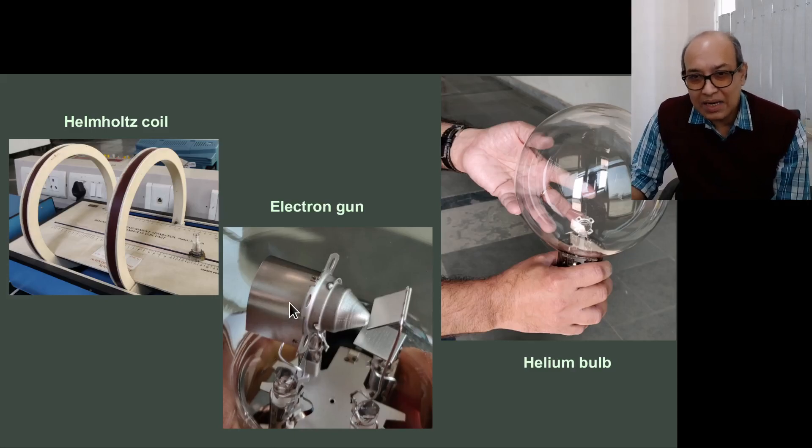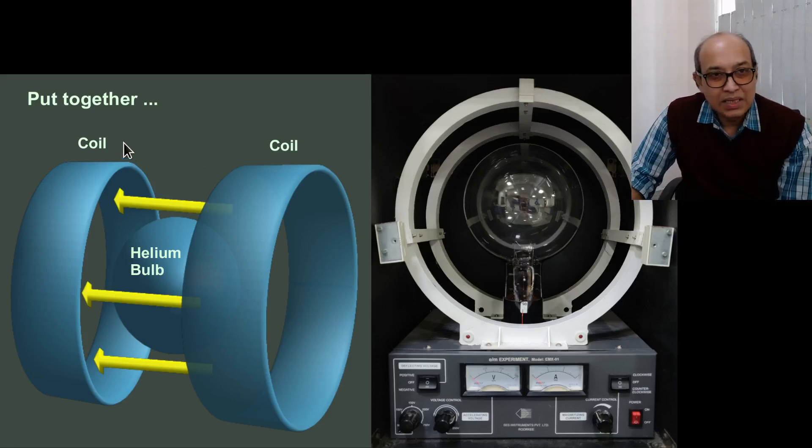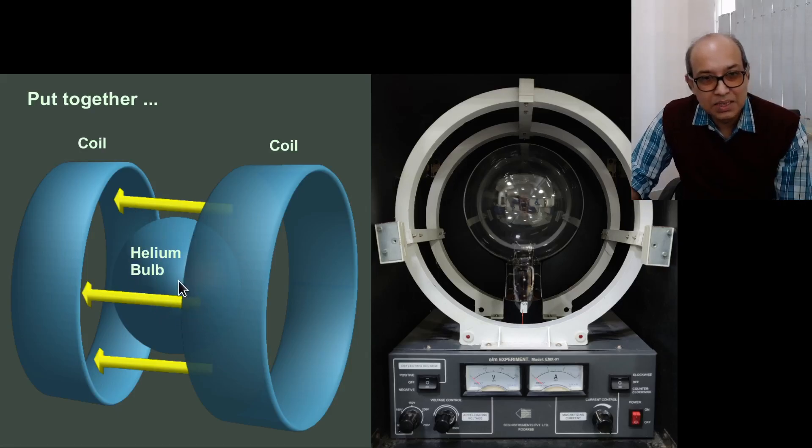Now this electron gun is of course put inside this helium bulb. This is our helium bulb, the one I am holding. It has very low pressure helium inside as I mentioned. And then we need to put this helium bulb inside the coil. Inside the coil we have constant magnetic field as the arrows show. And then this helium bulb will be in a constant magnetic field. And helium bulb already contains electron gun.